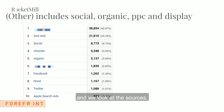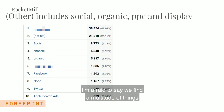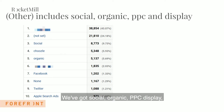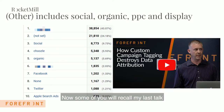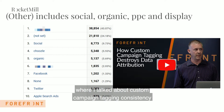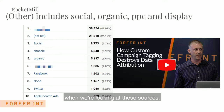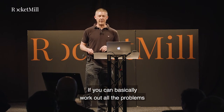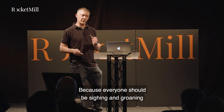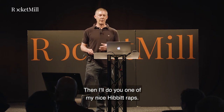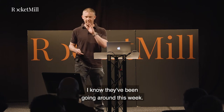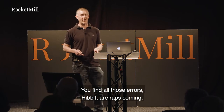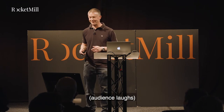When we dig in deeper and look at the sources inside the 'other' channel, we find social organic, PPC, and display — all misattributed to 'other.' What a nightmare. This goes back to my previous talk about custom campaign tagging, consistency, and getting it right. You really need to go and review those sources carefully. For those of you who are grads, I'll share this data if you can work out all the problems — and if you find all the errors, you'll earn one of my Gibbit raps.